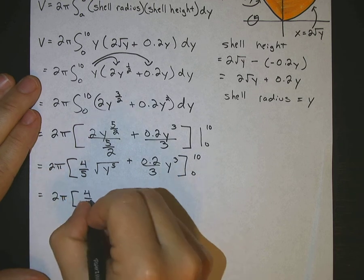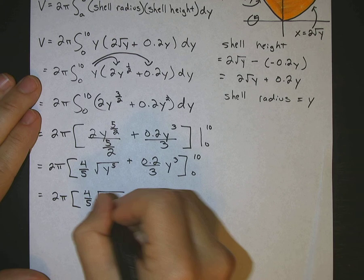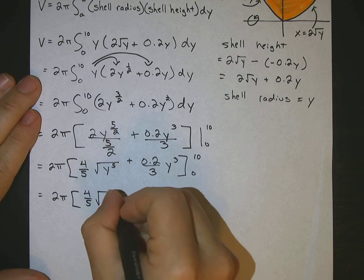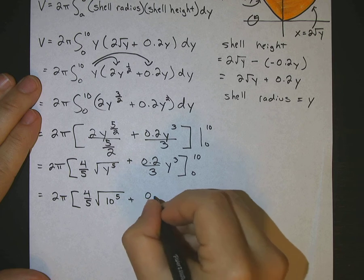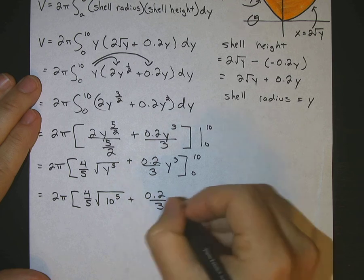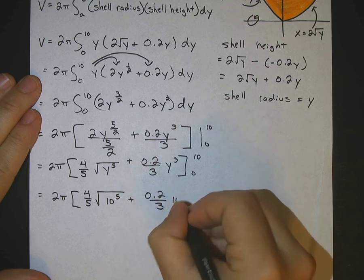We've got 4 fifths square root of input our 10, our upper limit to the 5th, plus 0.2 over 3, 10 cubed.